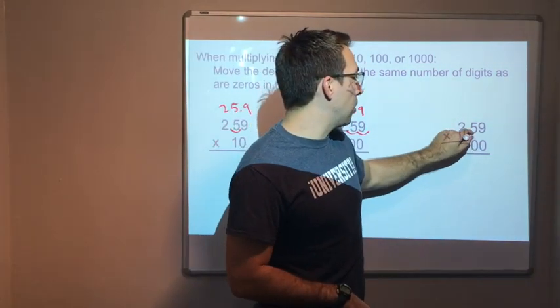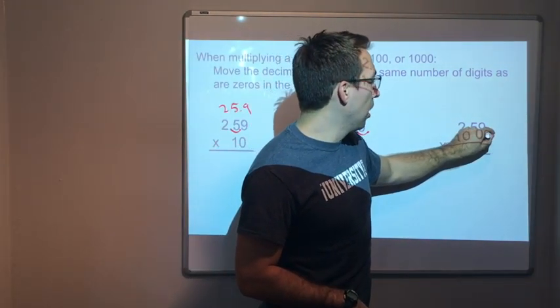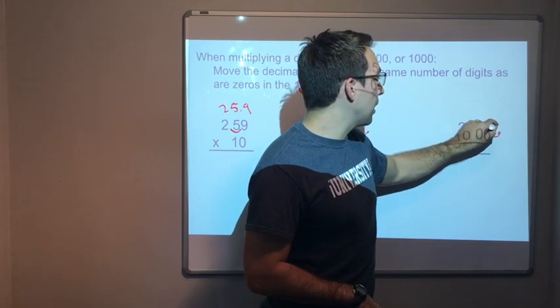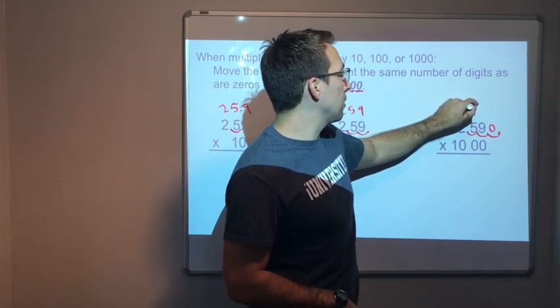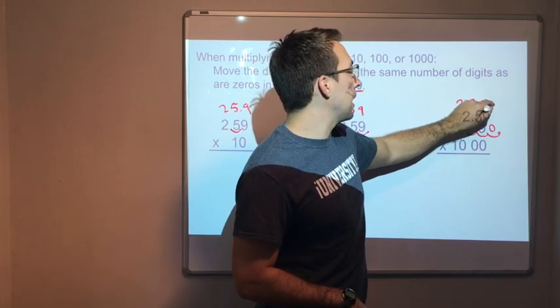And then three zeros. Oh, look. One, two. We'll add it right here and we'll add a zero. So now our answer is going to be two hundred, two thousand five hundred and ninety.